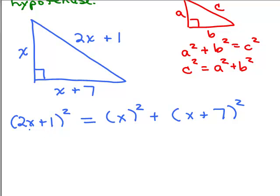Keep in mind, that does not mean 2x plus 1 equals x plus x plus 7 — just like c squared equals a squared plus b squared does not mean c equals a plus b. We're going to have to simplify each side by squaring the binomials, adding like terms, getting variables on one side and constants on the other. If it's a quadratic, we set it equal to zero and factor. How about you put the video on pause, see if you can figure out what x is, and then determine the hypotenuse.